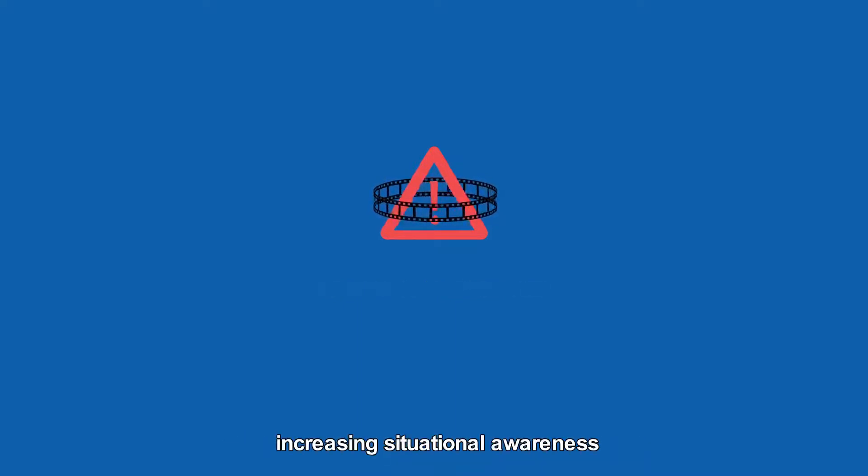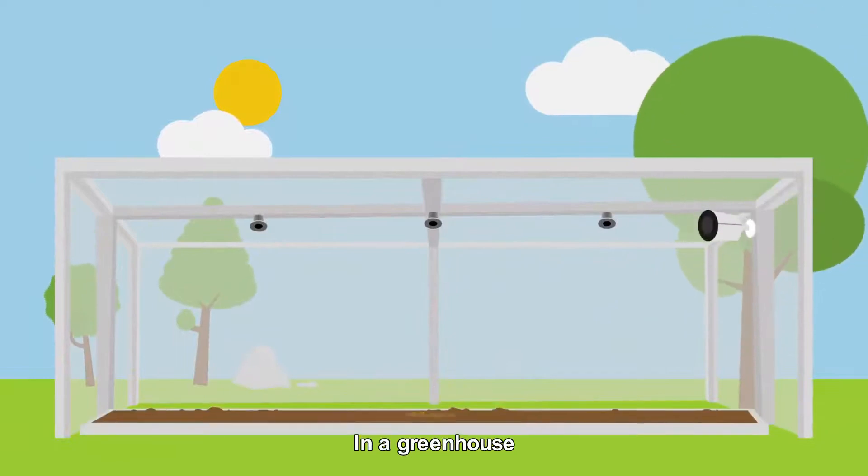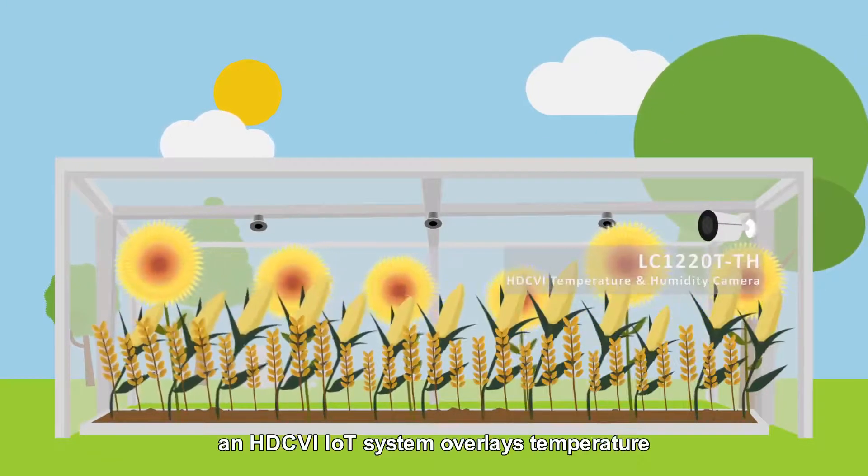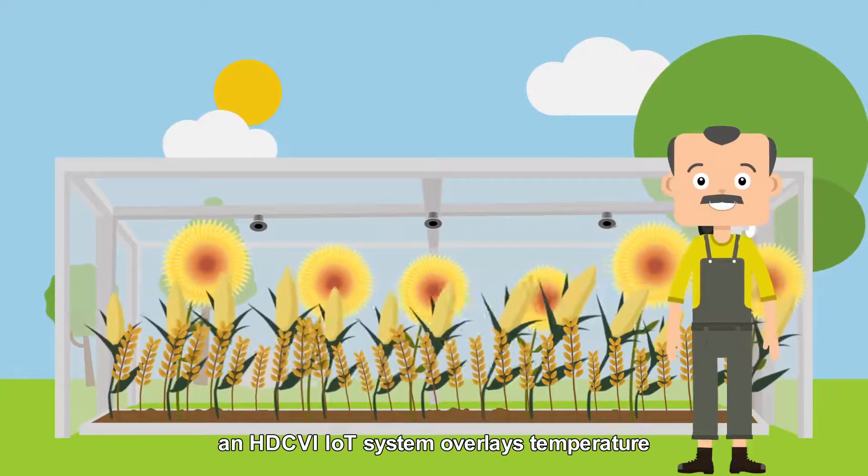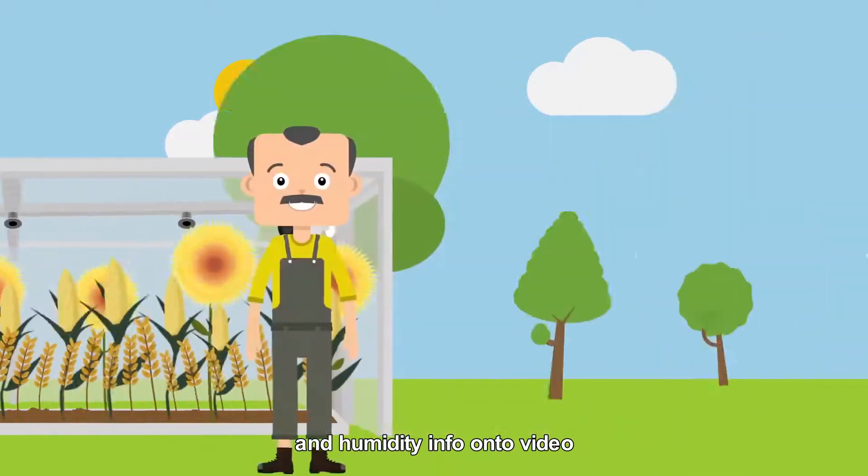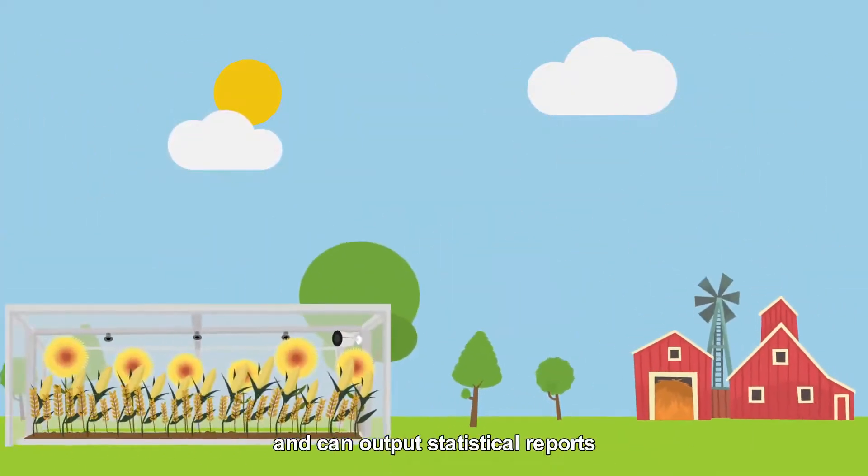In a greenhouse, an HDCVI IOT system overlays temperature and humidity info onto video and can output statistical reports.